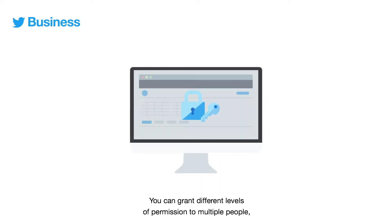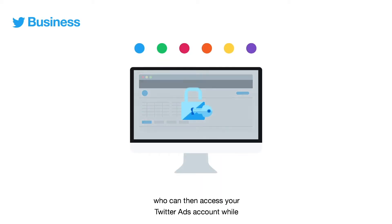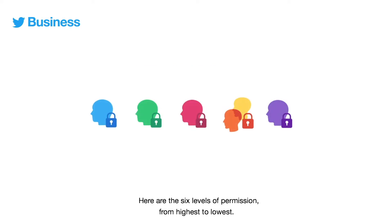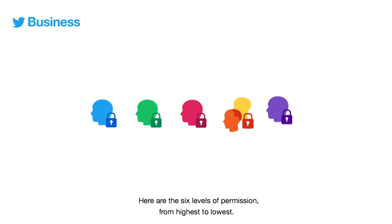You can grant different levels of permission to multiple people who can then access your Twitter ads account while logged into their own personal accounts. Here are the six levels of permission from highest to lowest.